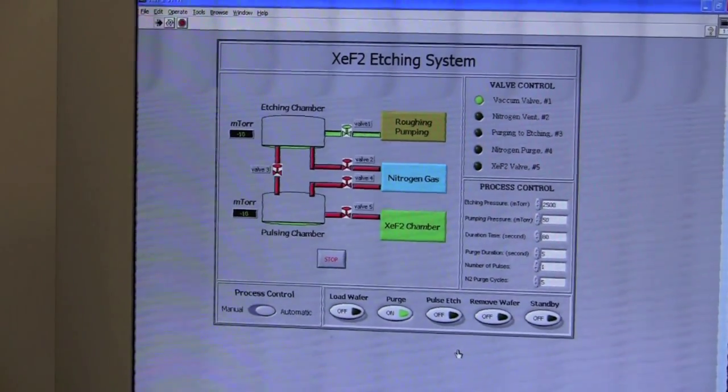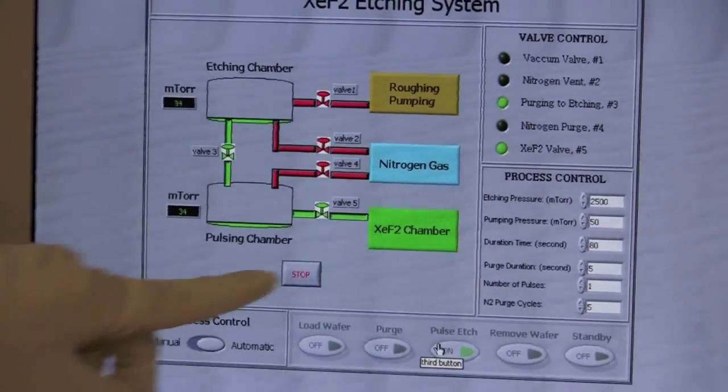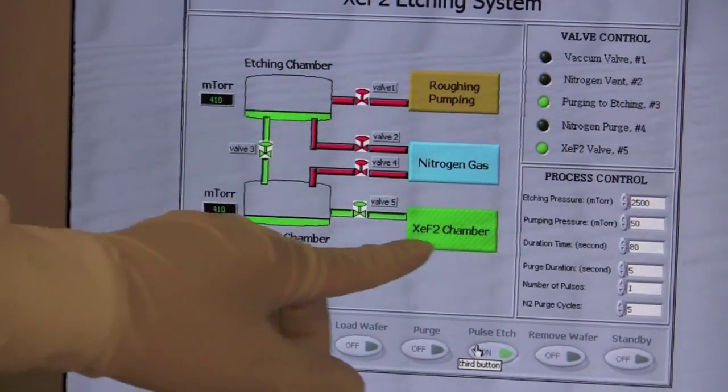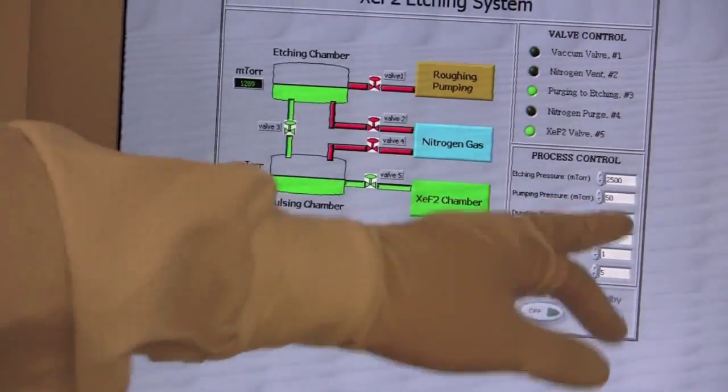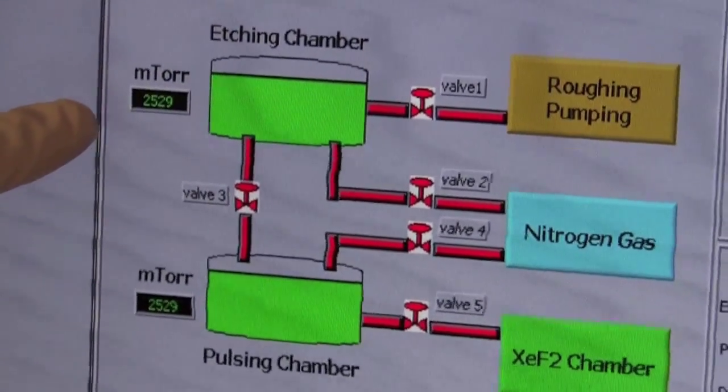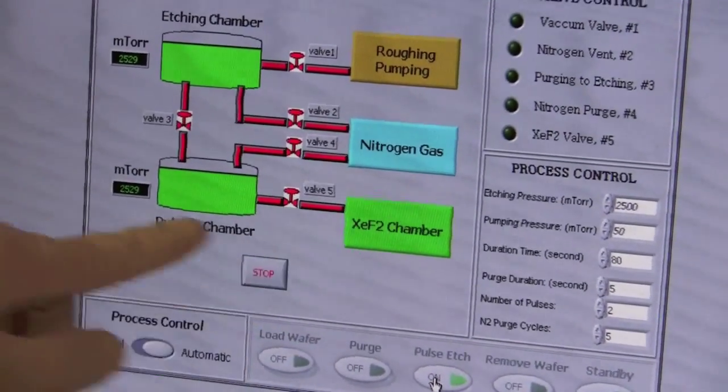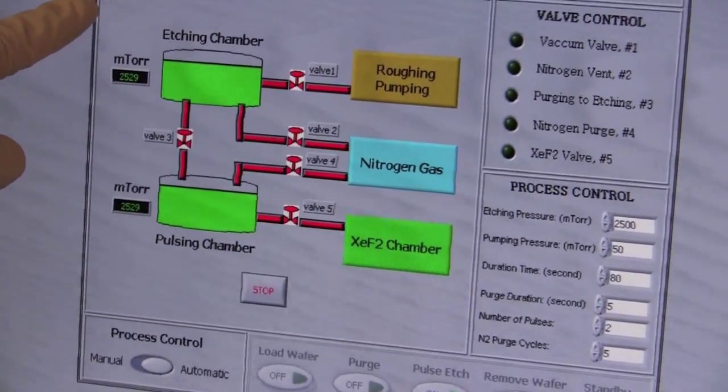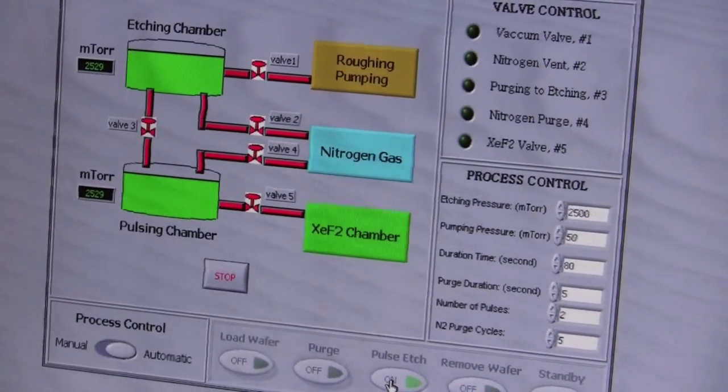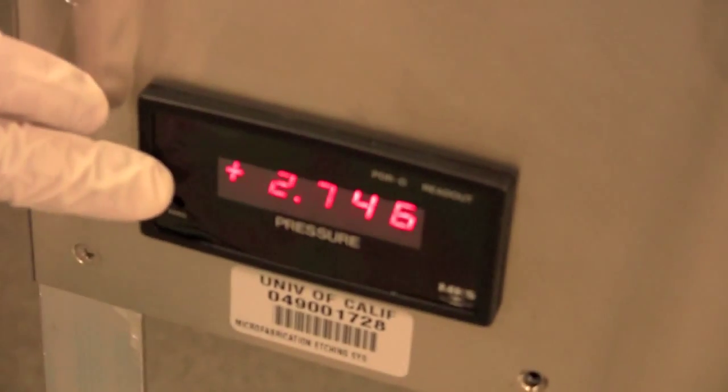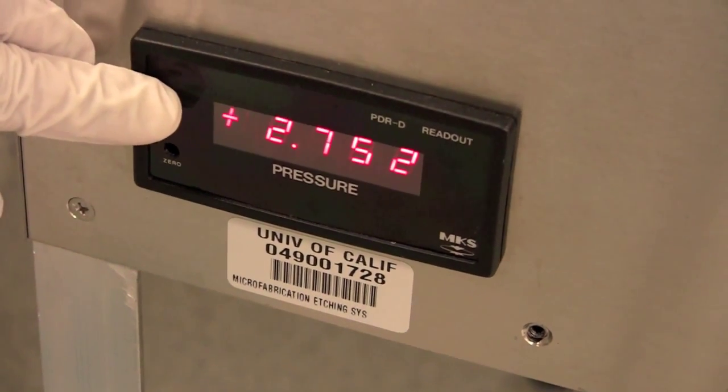Once you've opened the xenon difluoride bottle in the back, you're ready to press pulse etch. Now it will begin pulsing. As you can see here, the xenon difluoride chamber, or that bottle in the back, is now opened, and xenon difluoride crystals are sublimating into gas. The chamber is filling up, and it's going to hit our target pressure at 2,500 millitorr. Now the xenon difluoride chamber has reached 2,500 millitorr, the timer will start. As I mentioned before, this chamber doesn't have a true pulsing chamber. It just feeds directly through from the precursor bottle to the etching chamber. The precursor bottle is also used as an expansion chamber. This results in slightly higher pressures as xenon difluoride keeps being fed from the bottle, as you can see in the transducer down here. It's reporting about 2.7, and it's rising. It will continue to rise slowly as the etch process continues.